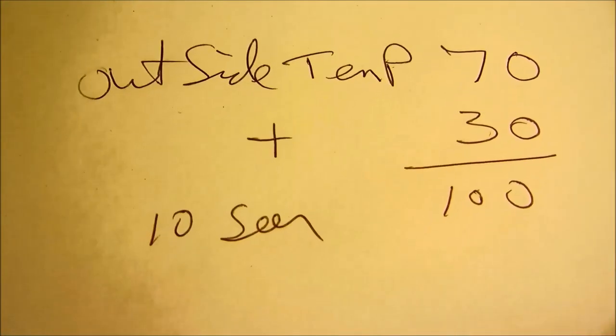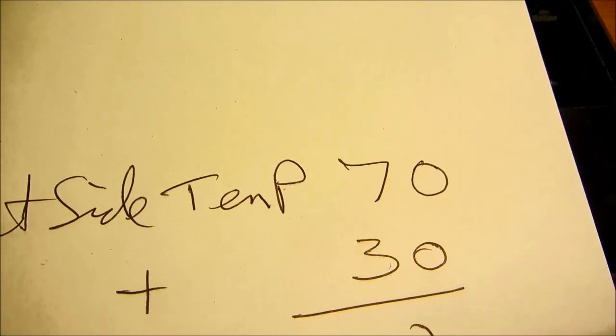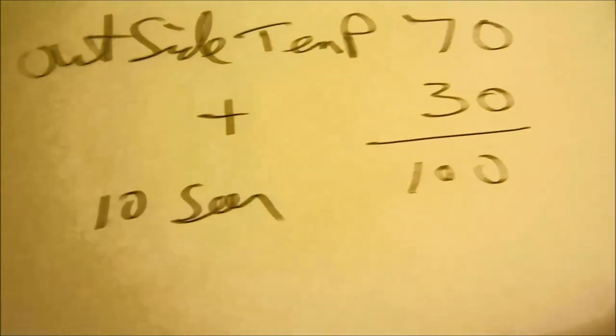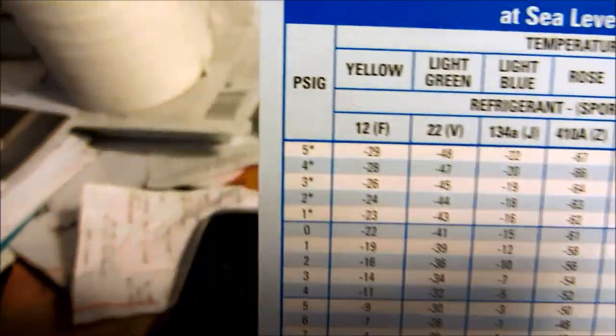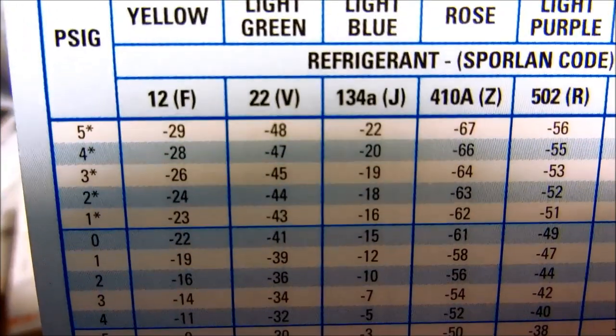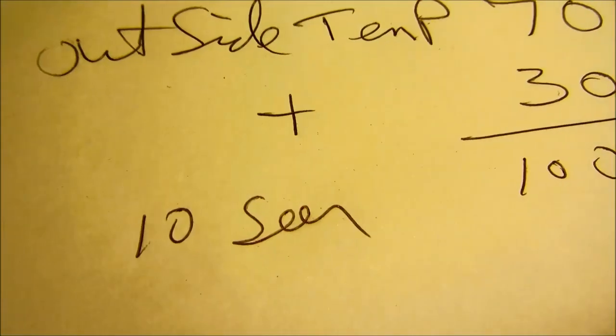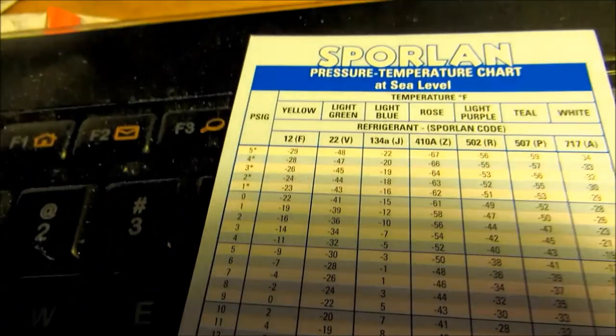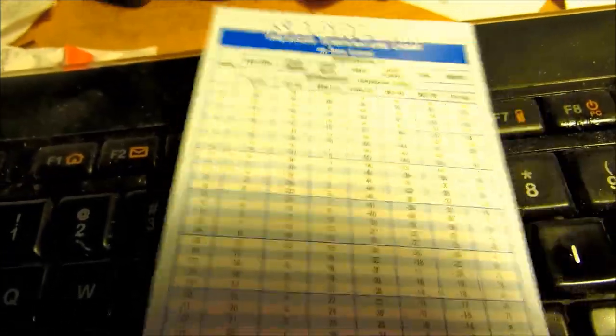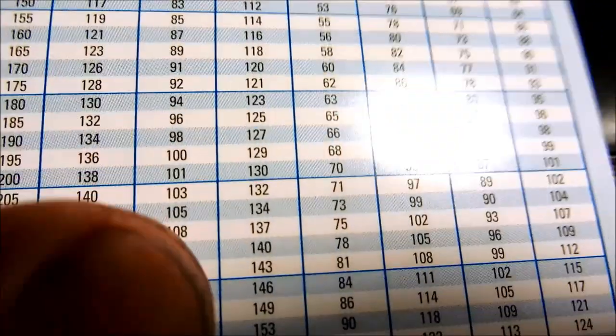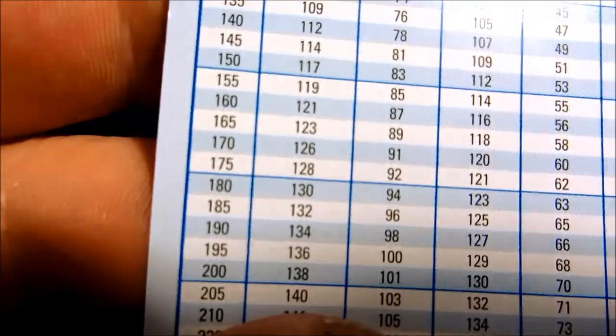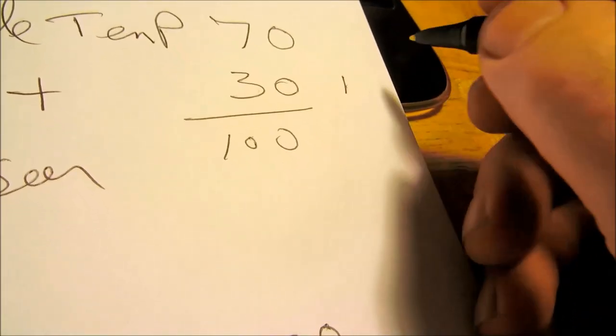The 30 rule for 10 SEER units: outside temperature plus 30 would give you 100. You come over to your PT chart. The second column is R-22. If your outside temperature is 70 and you got a 10 SEER unit, you add 30 to 70 so you got 100. Go down the R-22 scale to 100.